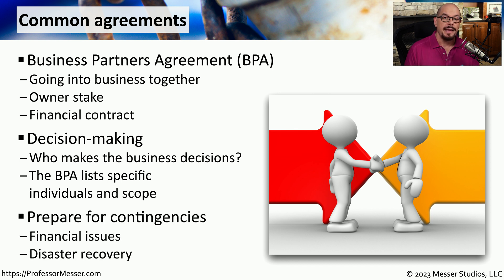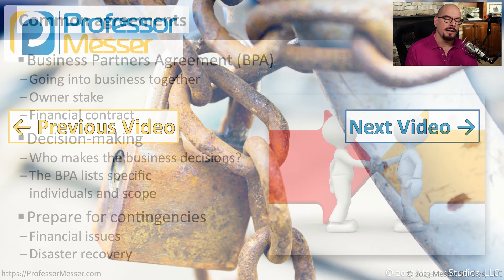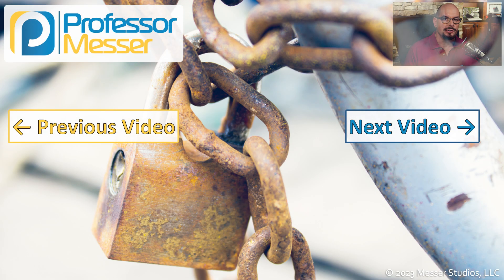The BPA is also valuable for detailing what happens when things go wrong — for example, what if there are financial issues between the partners, or what if a disaster shuts down the business? How does that affect the partnership? All of this should be documented and agreed to as part of the Business Partners Agreement.